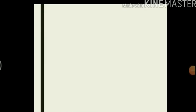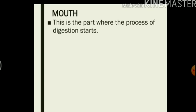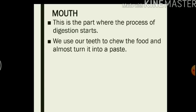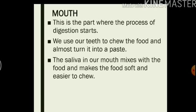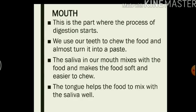Now let us have a look at each organ in the digestive system and their functions. We will start with the mouth. This is the part where the process of digestion starts. We use our teeth to chew the food and almost turn it into a paste. The saliva in our mouth mixes with the food and makes the food soft and easier to chew. The tongue helps the food to mix with the saliva well. Then we swallow the food.